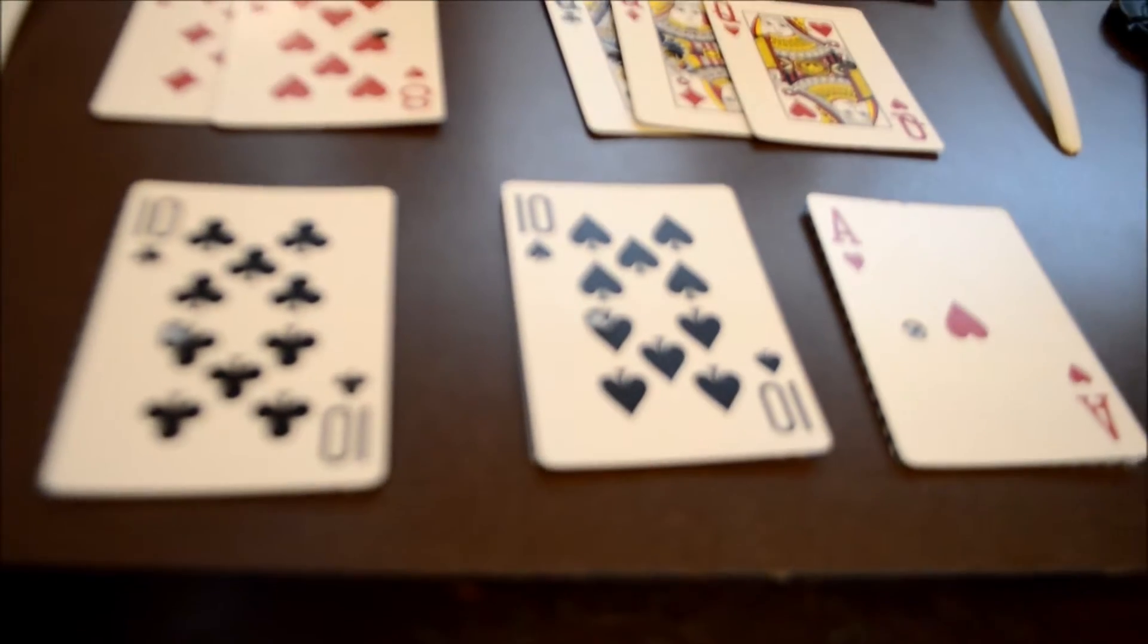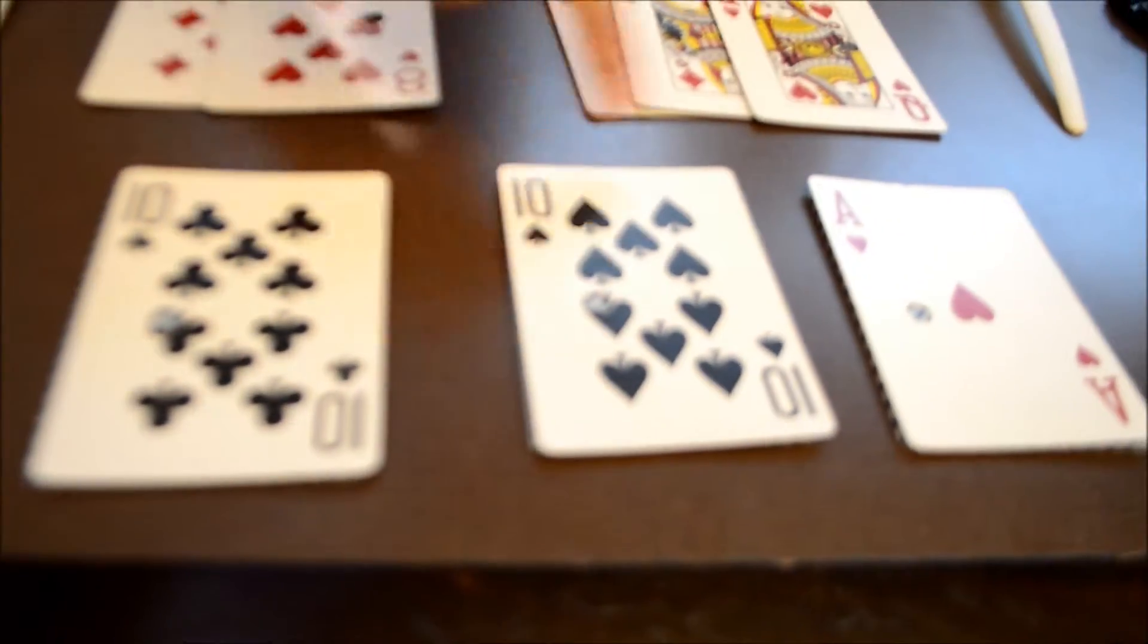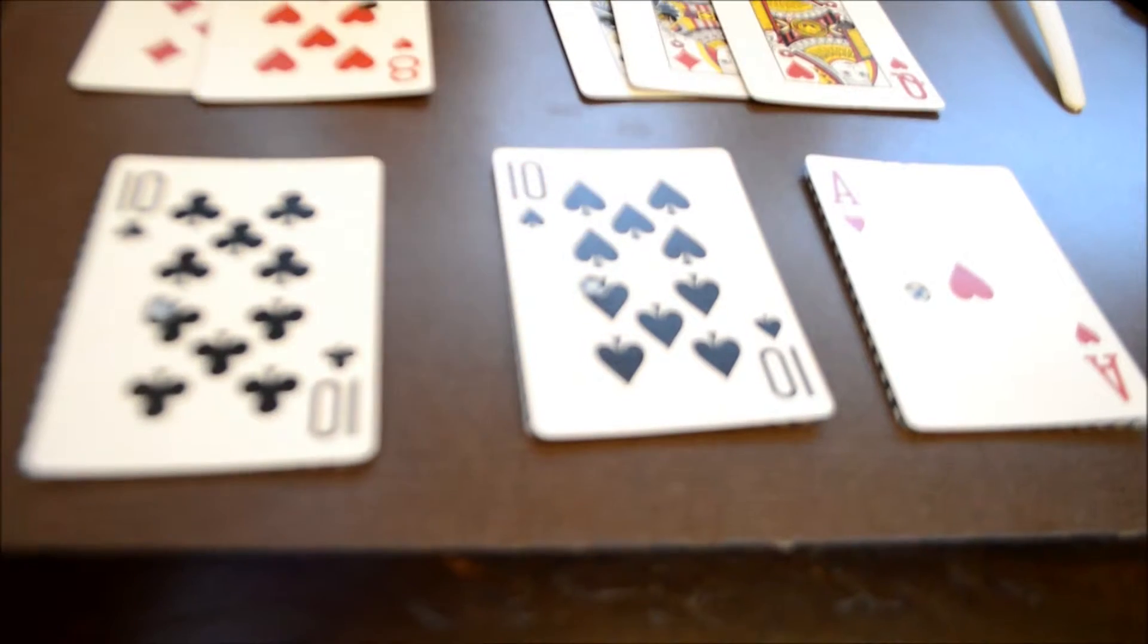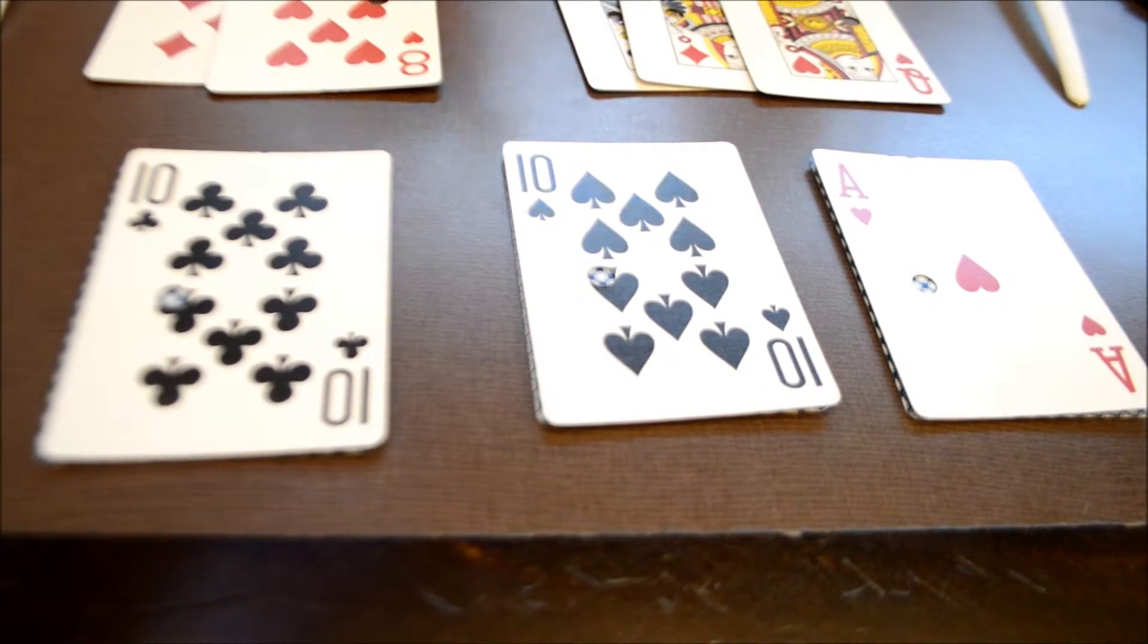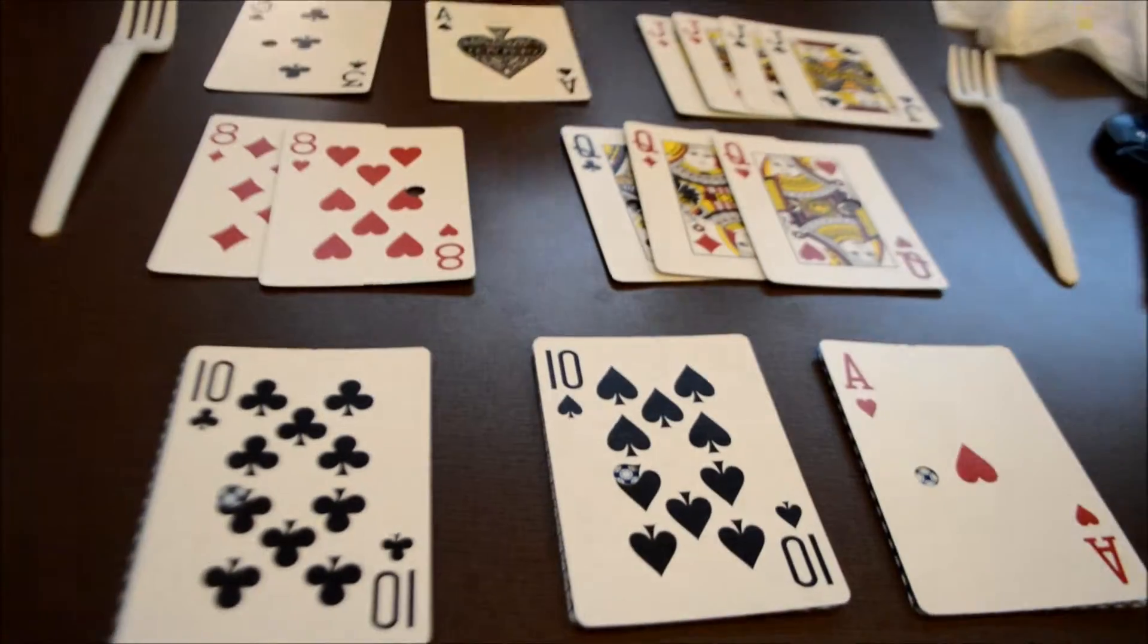So the objective of the game is basically the same as you want to get rid of all your cards. The setup though is a little bit different. So we're going to play you with three face-down cards and we're going to start with six cards in our hand. And we're going to play three cards face-up on top of the three face-downs and end up with three cards in our hand.